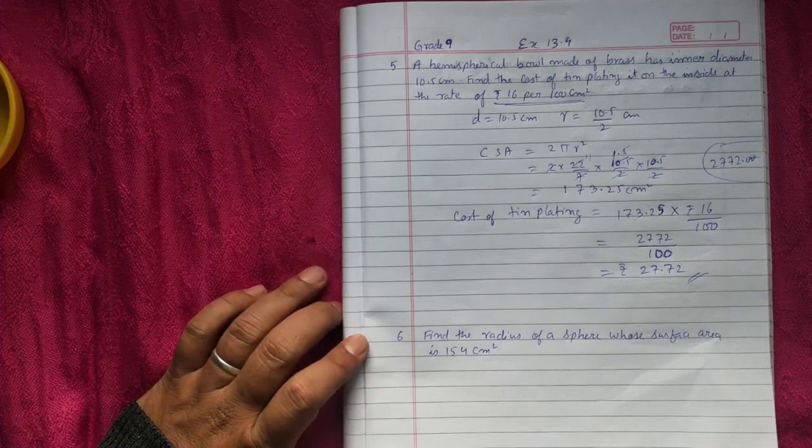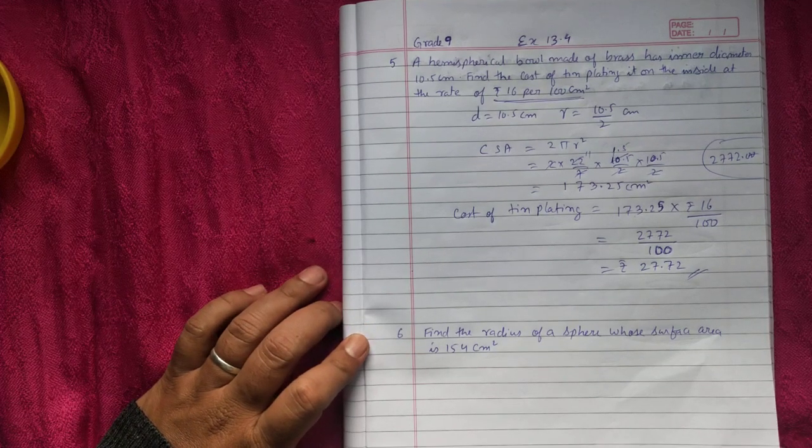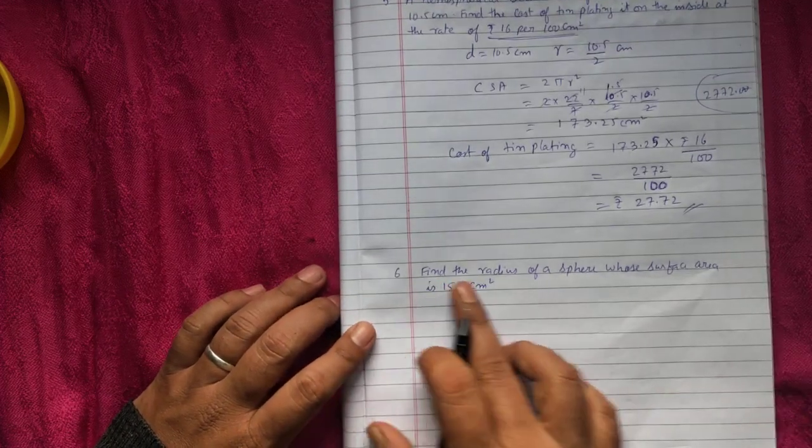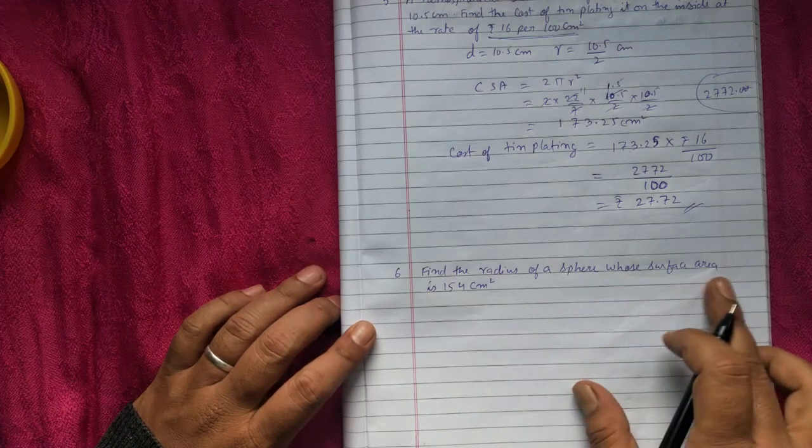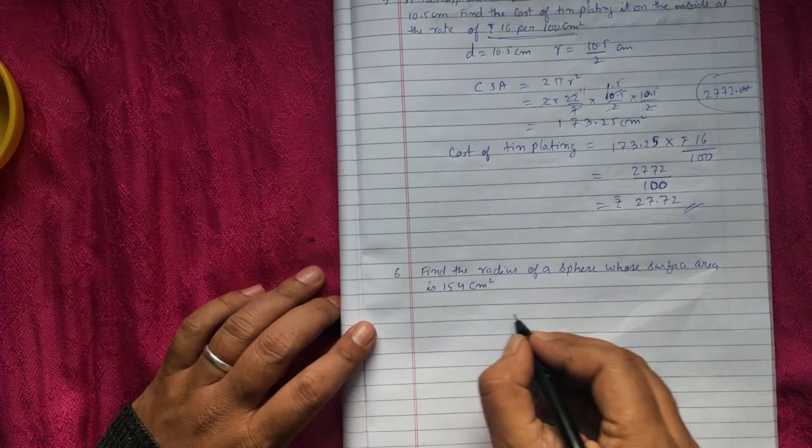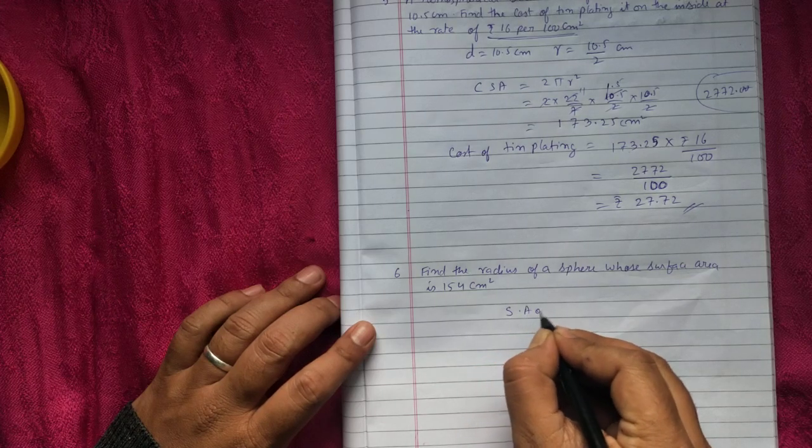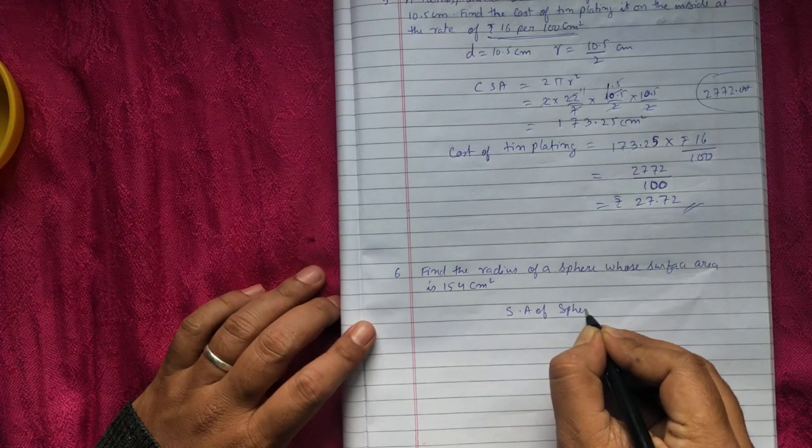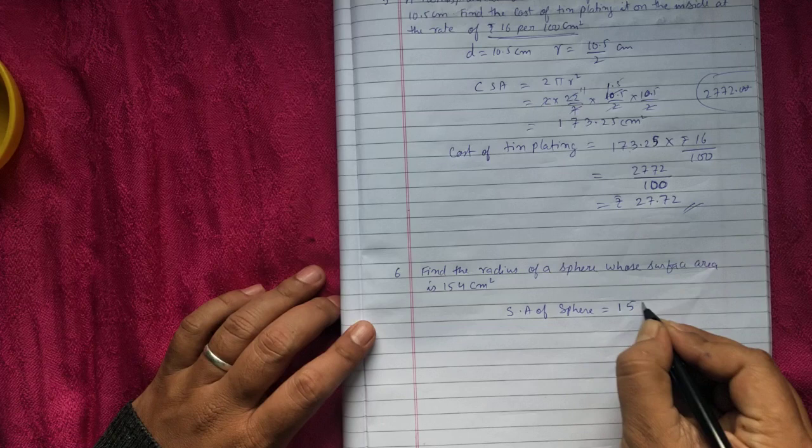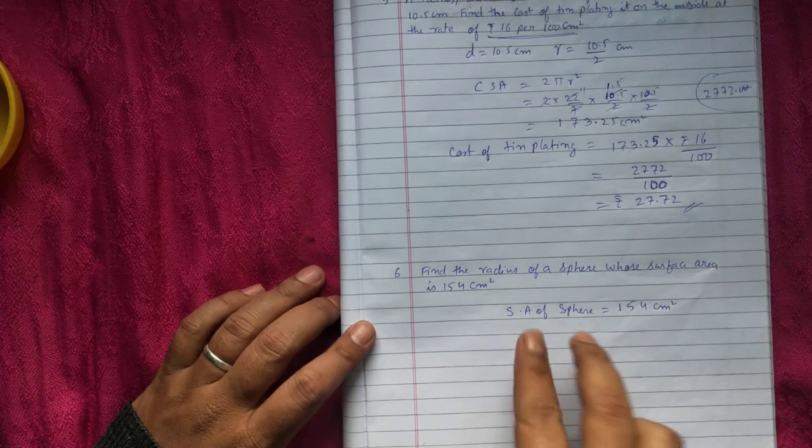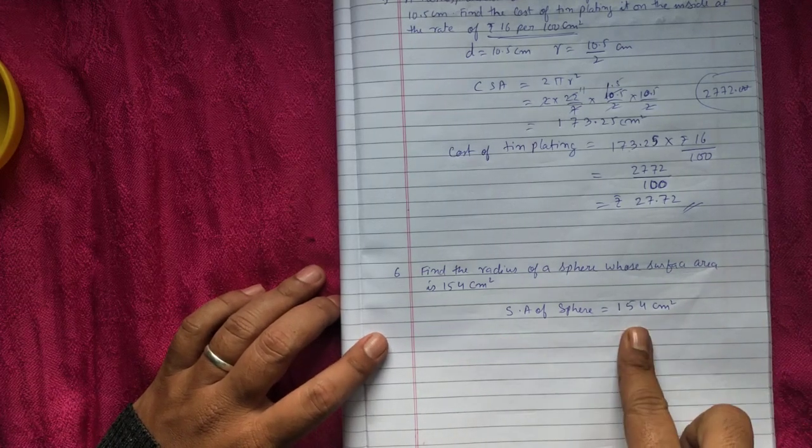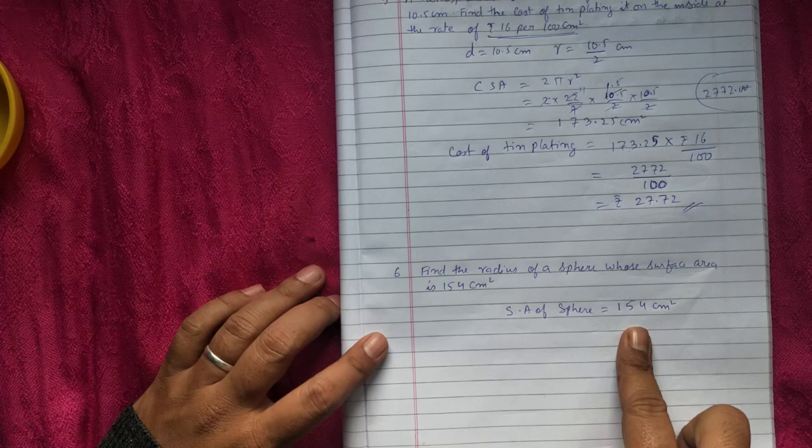Let's do question number six. Find the radius of a sphere whose surface area is 154 cm square. When the value is already given I always say that use a formula on the left side.